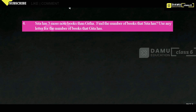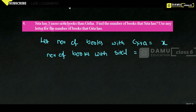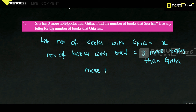Next: Sita has 3 more notebooks than Gita. Find the number of books that Sita has, using any letter for Gita's books. Let the number of books with Gita equal x. Then the number of books with Sita equals 3 more than Gita, meaning x plus 3, since 'more' means addition.